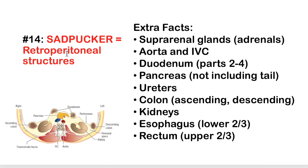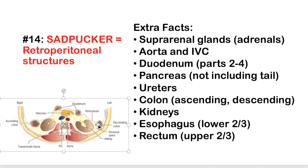Fact 14: SAD PUCKER is the mnemonic for retroperitoneal structures. Key details: the duodenum — parts two through four (not the proximal portion) are retroperitoneal. The pancreas is retroperitoneal but the tail is not (it's in the splenorenal ligament). The ascending and descending colon are retroperitoneal; the transverse colon is not. The esophagus is only the lower two-thirds retroperitoneal, and the rectum only the upper two-thirds.